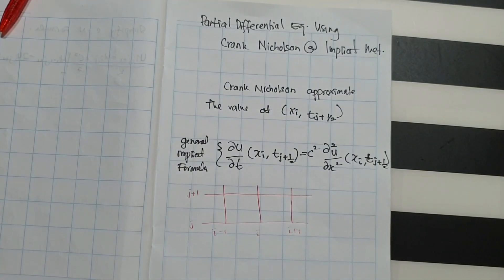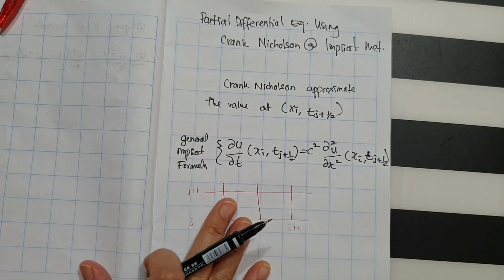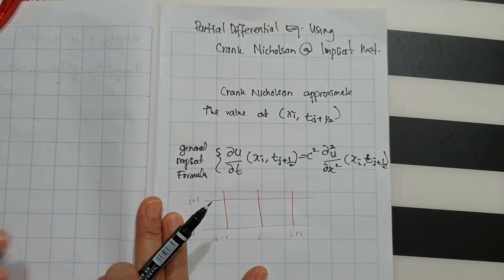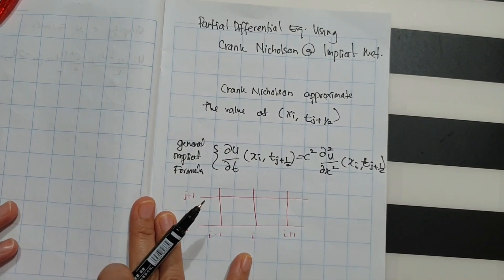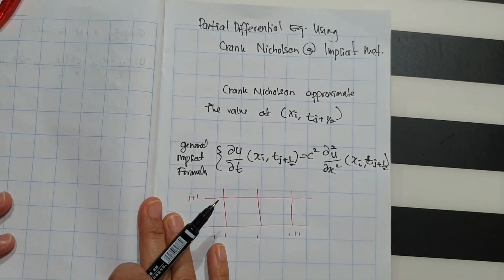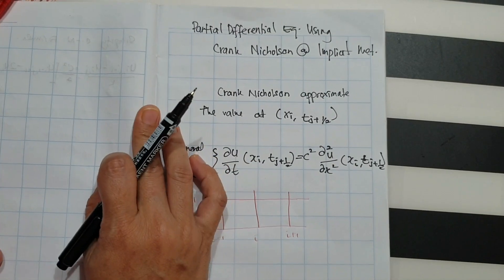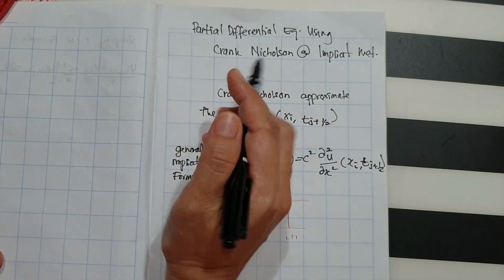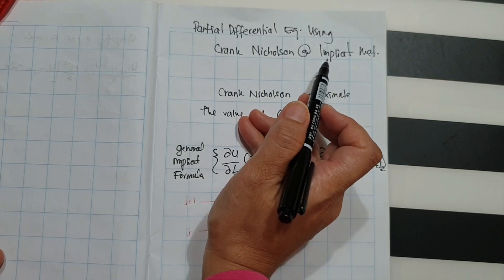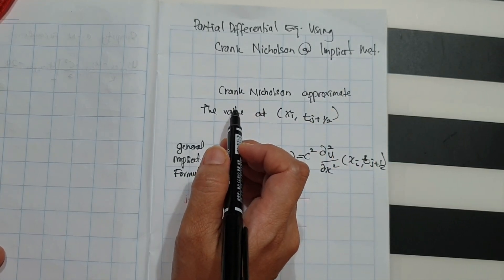Assalamualaikum warahmatullahi wabarakatuh. We're going to continue our lecture on the final topics in chapter 9, which is on the partial diffusion equation. This time the approximation we'll be using is the Crank-Nicolson or implicit method for the solution to approximate the value for the heat equation.